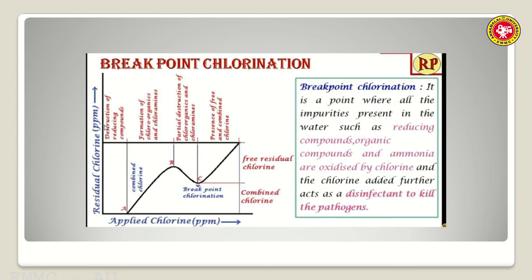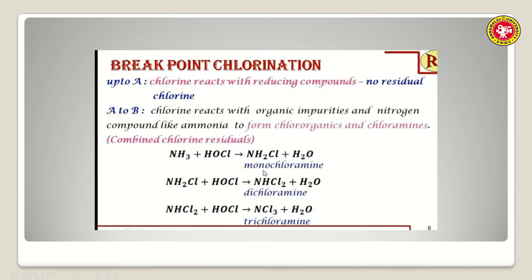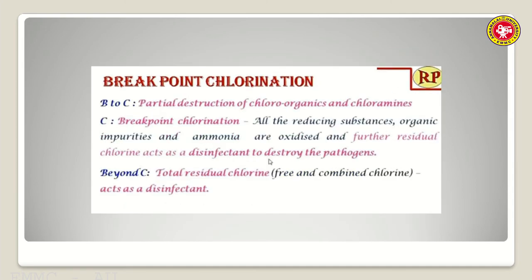The three jobs completed before the breakpoint are: destruction of reducing compounds, formation of chloramines and chloro-organic compounds, and then their destruction. The point at which free chlorine is liberated after all three jobs are done and acts as a disinfectant is called breakpoint chlorination. You must apply chlorine dosage until you reach the breakpoint. Beyond point C, the total residual chlorine acts as disinfectant.